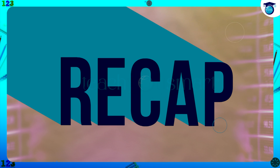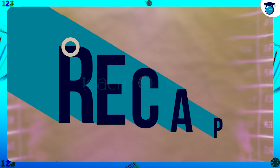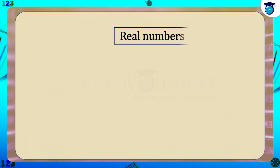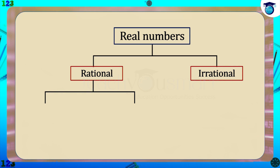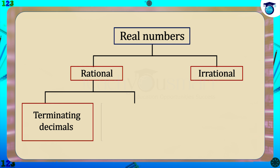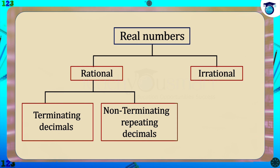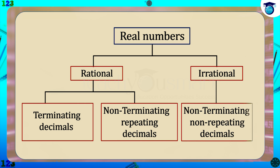Let's have a quick recap. Real numbers are classified as rational numbers and irrational numbers. The decimal form of rational numbers are of two types: terminating decimals and non-terminating repeating decimals. Irrational numbers are always non-terminating non-repeating decimals.